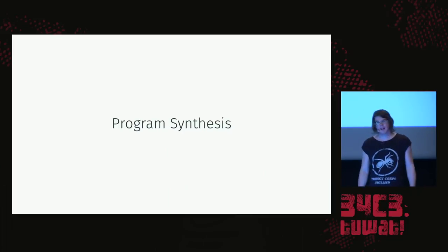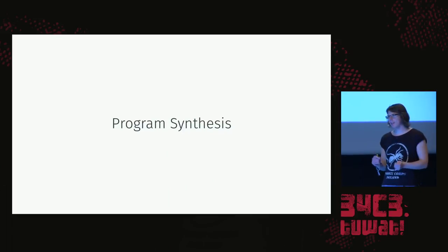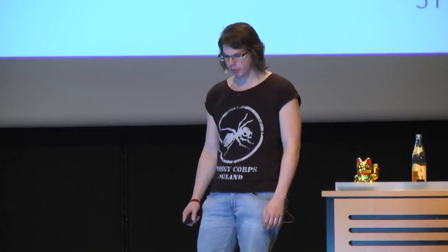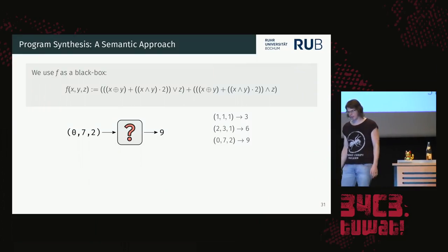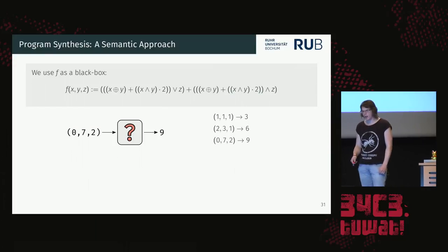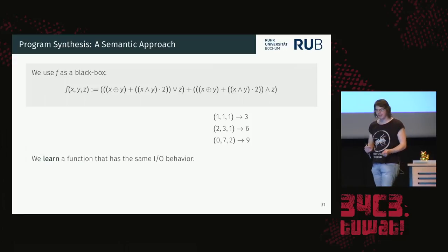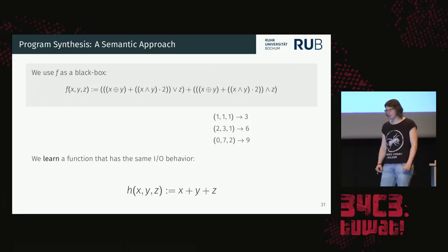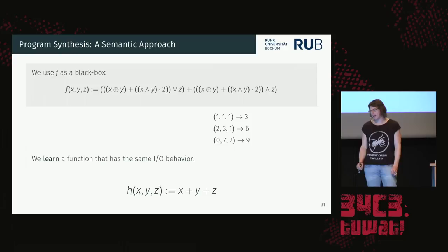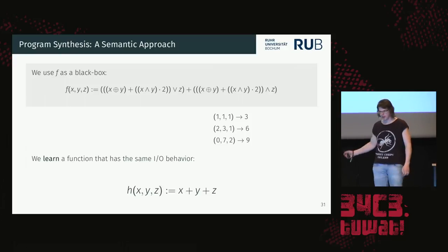Obfuscation is semantics-preserving — it has the same input/output behavior. So why not use the function as a black box and observe what it does? Generate random inputs like (1, 1, 1) and observe output 3, note it down, repeat many times. Then, without looking at the code at all, learn a function with the same IO behavior — like x + y + z. The goal of program synthesis is to automatically learn these functions from IO samples.